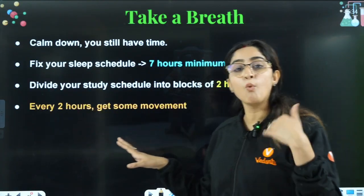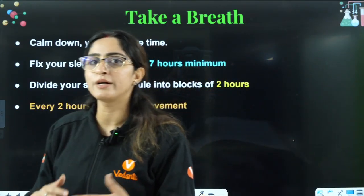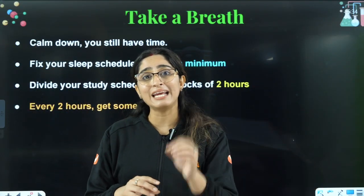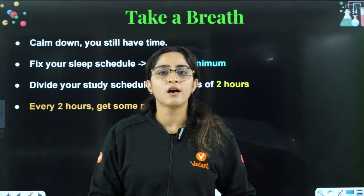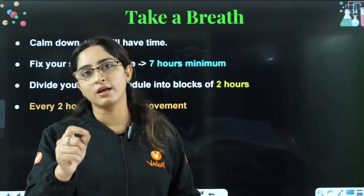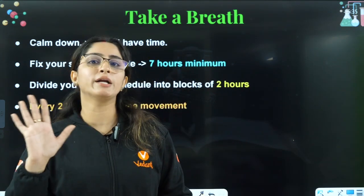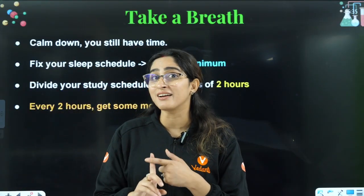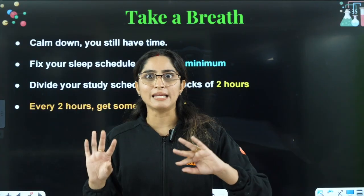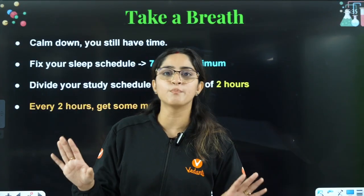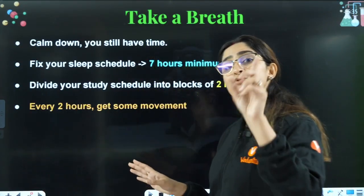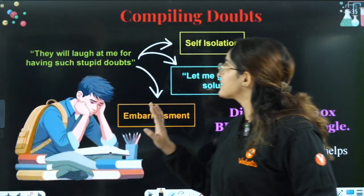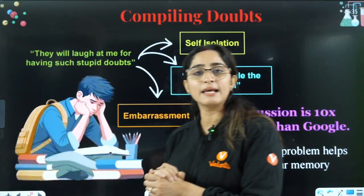Every two hours, get some movement — do a little exercise or walk. Also remember to eat home-cooked food, because one episode of food poisoning can waste 15 to 20 days of your preparation, and you'll regret it. At this point, avoid outside food entirely. Eat simple home-cooked food — we simply can't afford to fall ill right now.